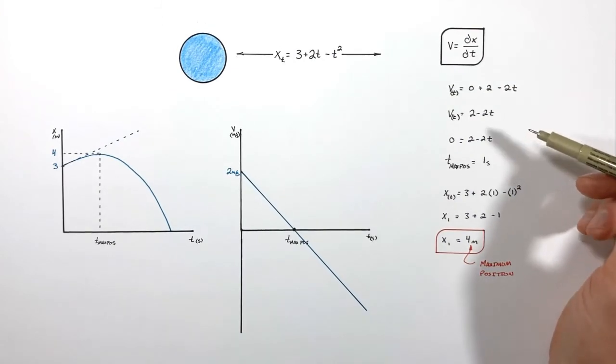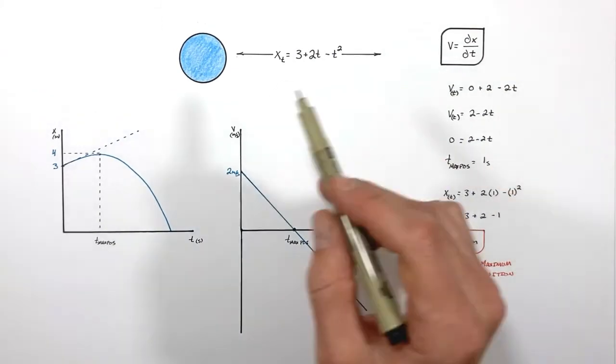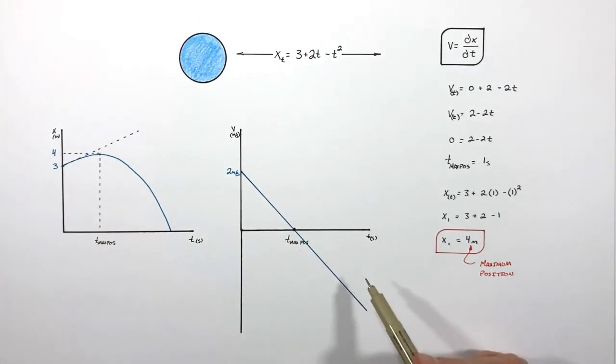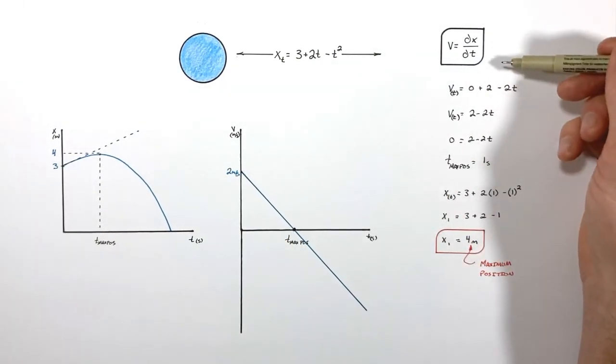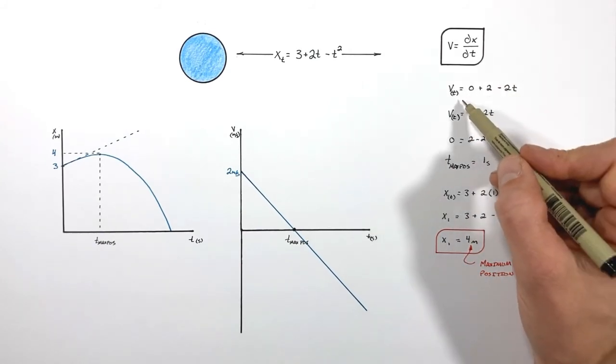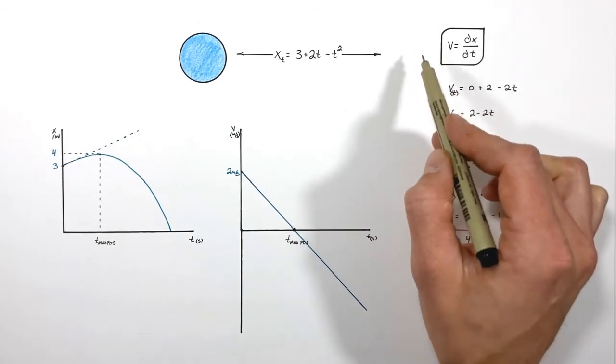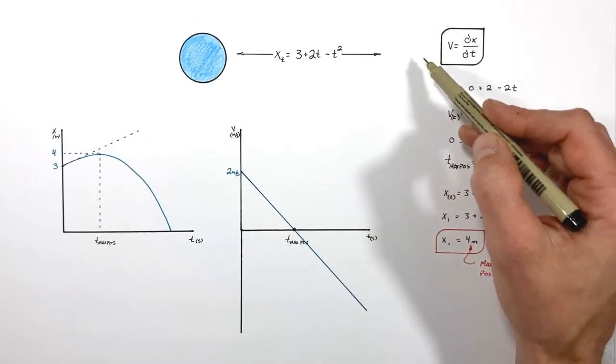Now one thing I want to point out is that in solving this problem we took a look at the position as a function of time and the velocity as a function of time, and then we related those two together. And we realized that conceptually the velocity had to be 0 at its maximum position, or when it reaches its farthest point it's going to go over here to the right.